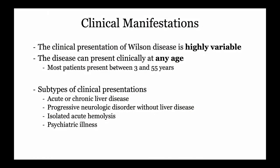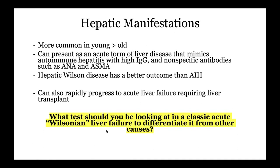Clinically, copper overload or Wilson's disease has a highly variable clinical presentation. It can present with neurologic symptoms, psychiatric symptoms, and at pretty much any age. Subtypes include: acute or chronic liver disease, progressive neurologic disease mainly without liver disease, isolated hemolytic anemia, or even primary psychiatric illness. The hepatic manifestations are more common in younger Wilson's patients and can present as severe acute liver injury resembling autoimmune hepatitis — with increased IgG, nonspecific antibodies like ANA and ASMA — but Wilson's has a better prognosis than autoimmune hepatitis and can progress to acute liver failure.